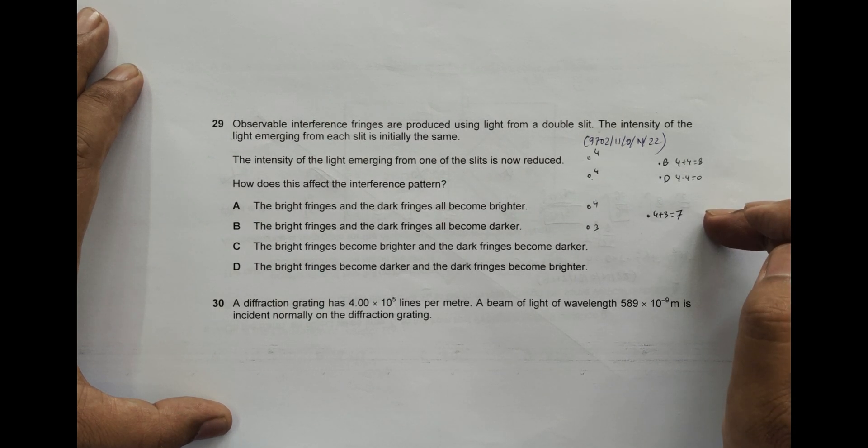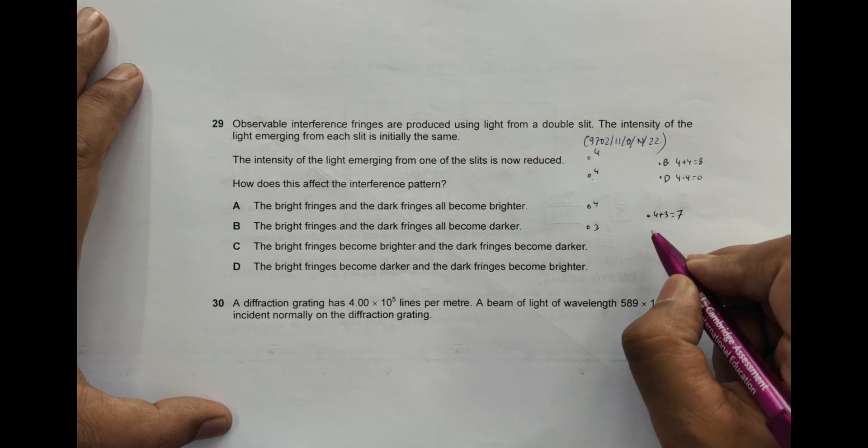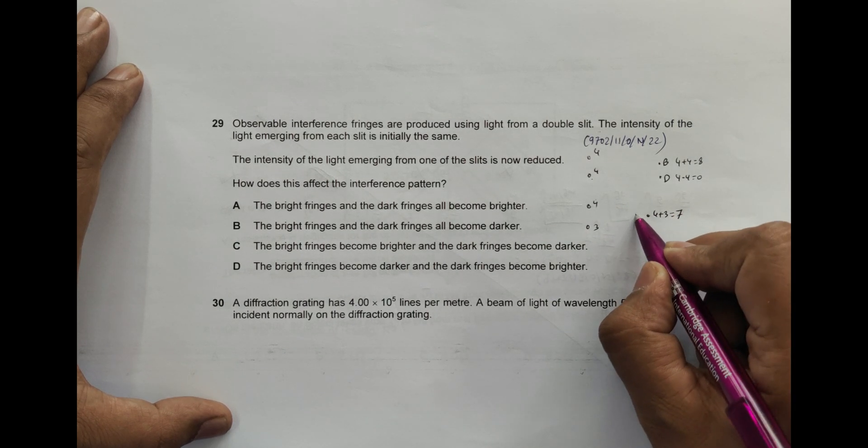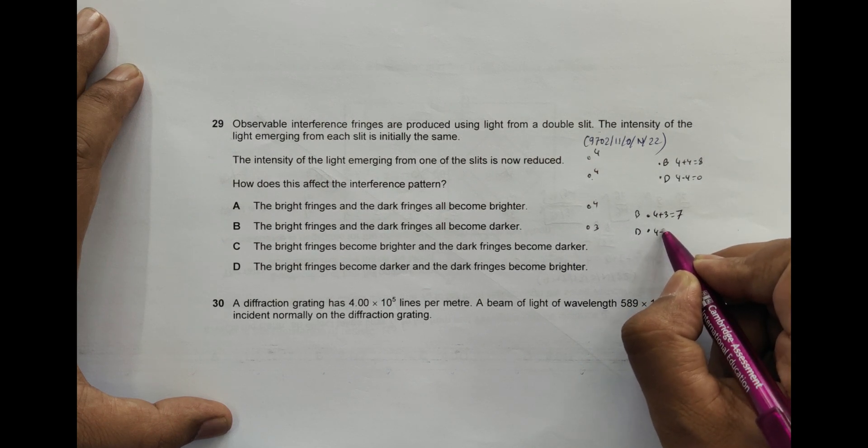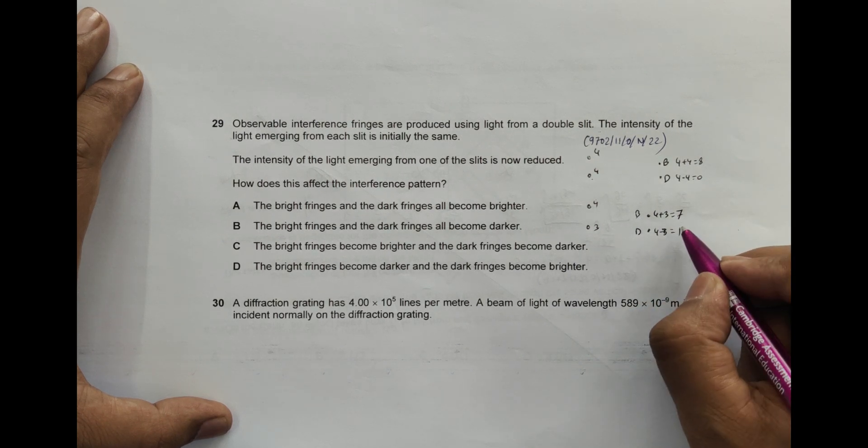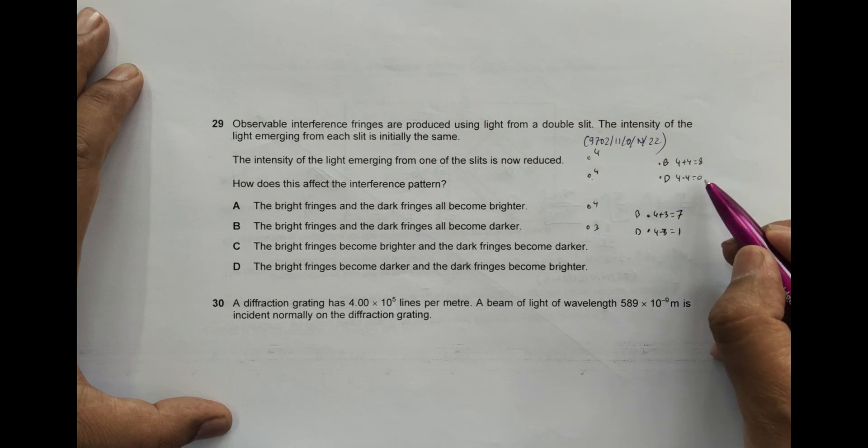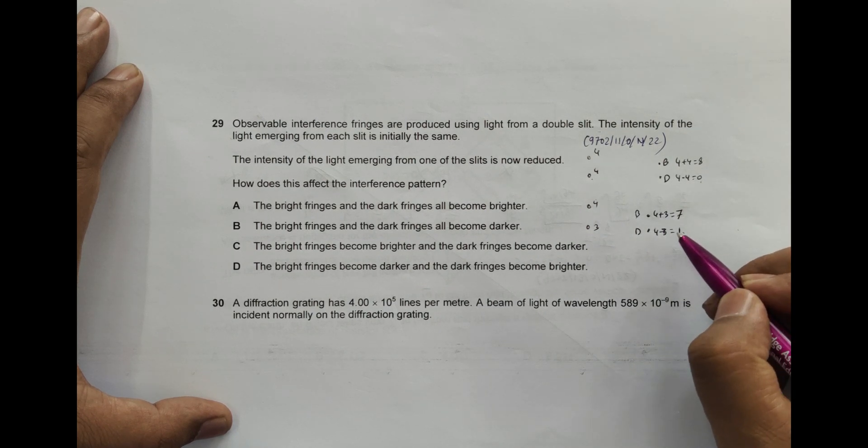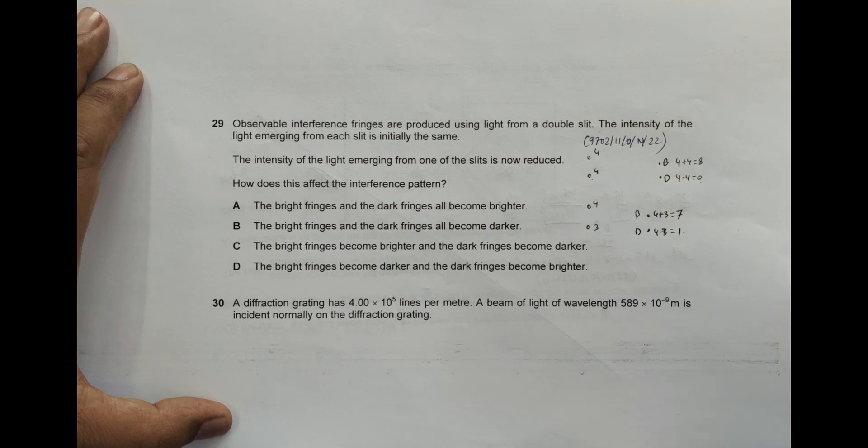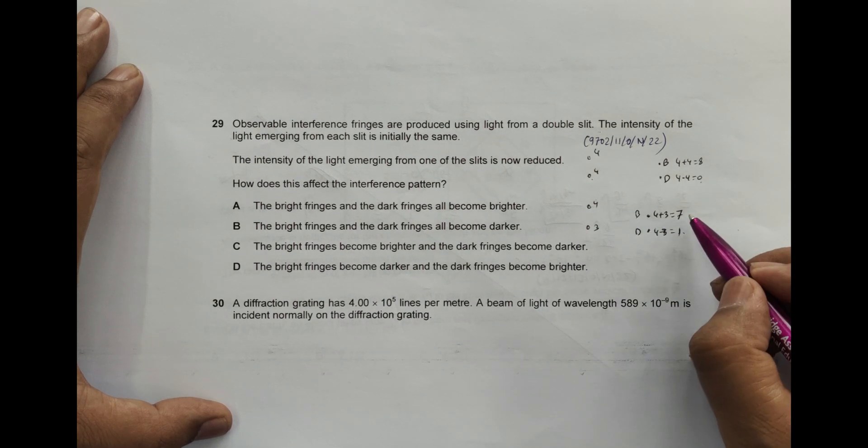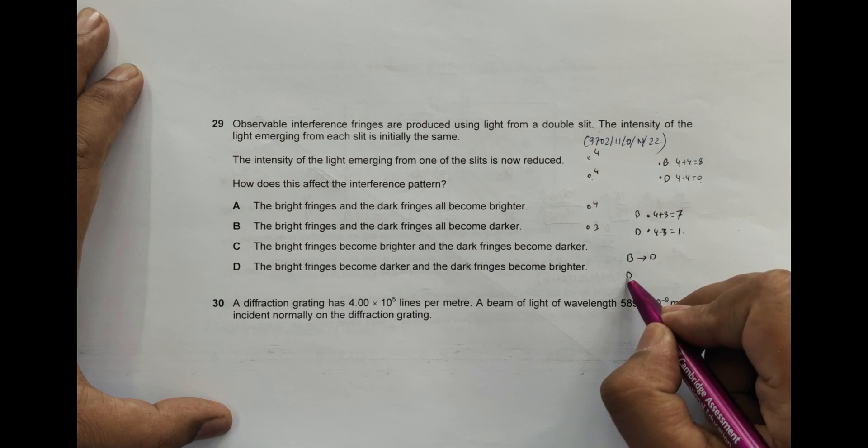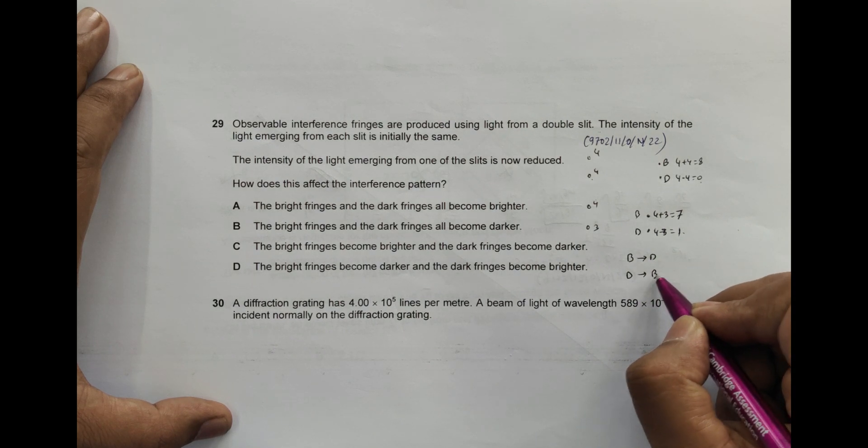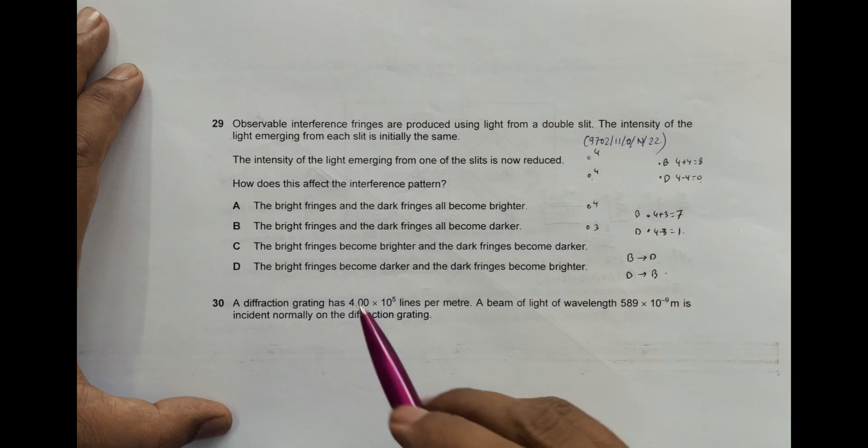For the dark one, the energy becomes 4 minus 3 equals 1. From zero it becomes one, so the darker one becomes more brighter. The bright one becomes darker and the dark one becomes a bit brighter.